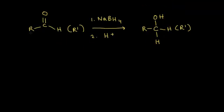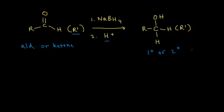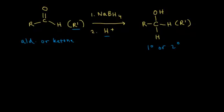On the left, we're starting with either an aldehyde or a ketone — so there's either a hydrogen attached to your carbonyl or an R prime group. We're going to add sodium borohydride, and then we're going to add a proton source — it could be just about anything, so H+ tends to work. And we're going to form either a primary or a secondary alcohol, depending on our starting materials.